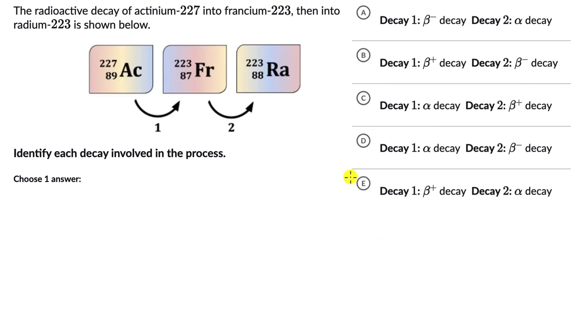The radioactive decay of actinium-227 into francium-223, then into radium-223 is shown below. Identify each decay involved in the process.